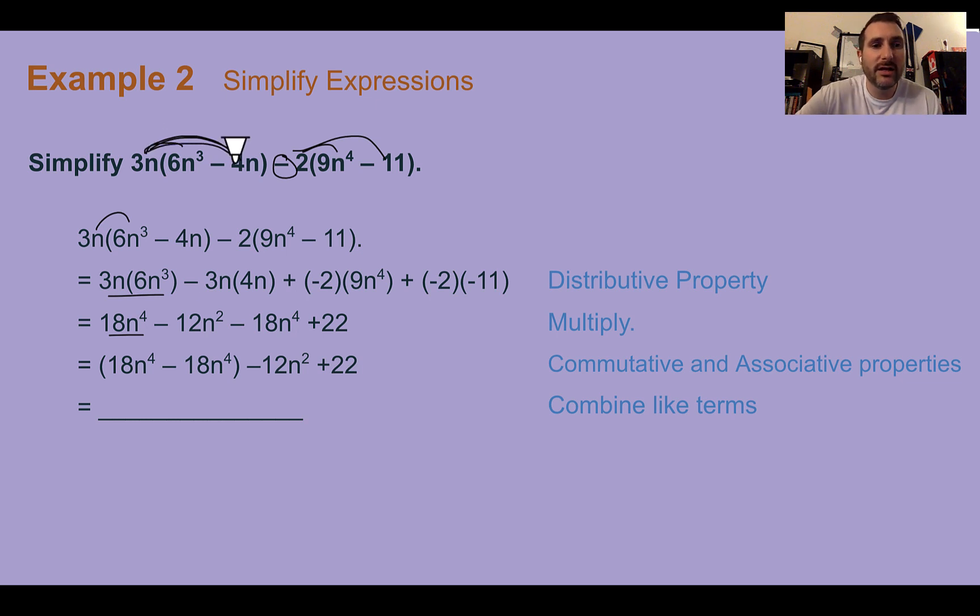Then if we do 3n times -4n, we would get 3 times -4, which is -12. And then n times n is n². For our other part, I'm just going to take this as -2 instead of subtracting 2. We can think about it either way. But -2 times 9 is -18. And then there's no n outside, so we just are going to keep n⁴. And then -2 times -11, a negative times a negative is a positive. So positive 22.